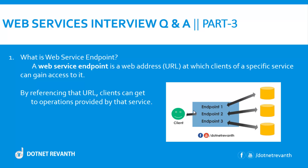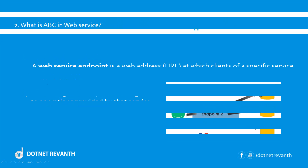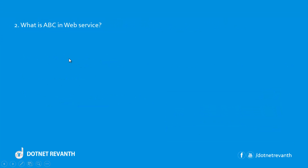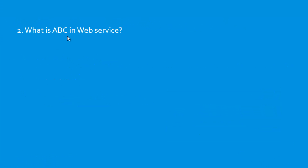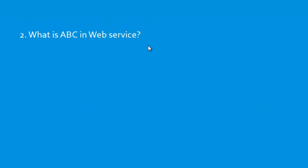A client application can have multiple endpoints; depending upon the endpoint, it will connect to that particular web service. Second question: what is ABC in web service?